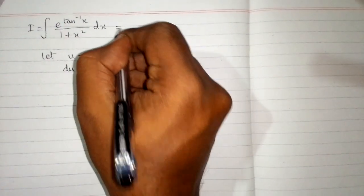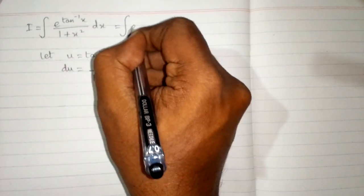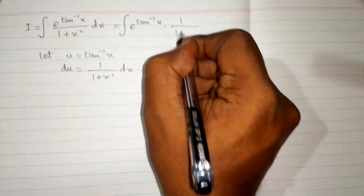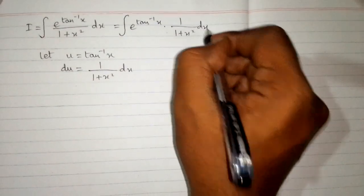Now the integral can be written as e to the power tan inverse x multiplied by 1 upon 1 plus x square dx.